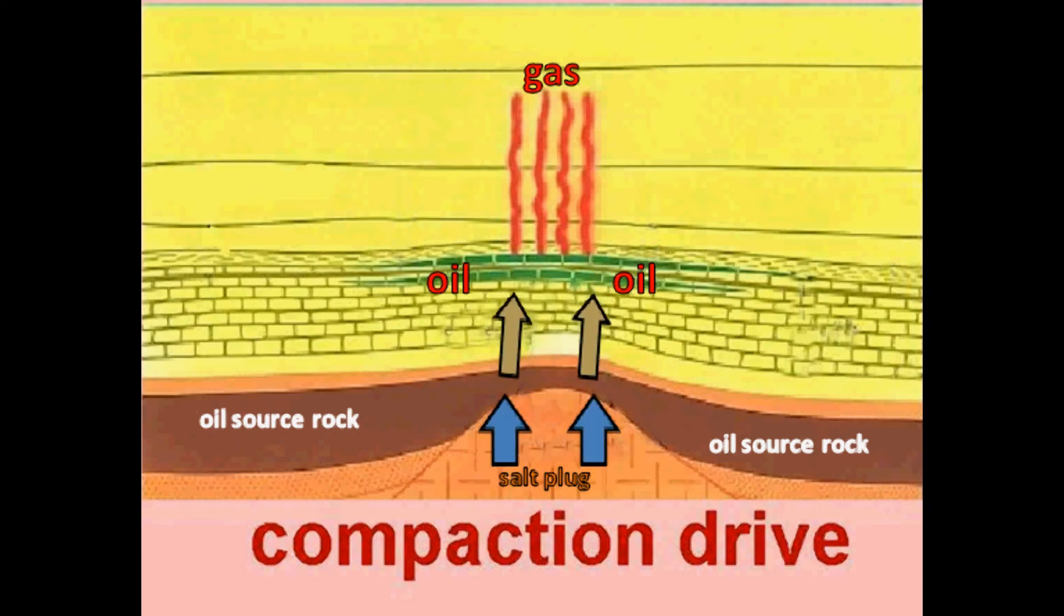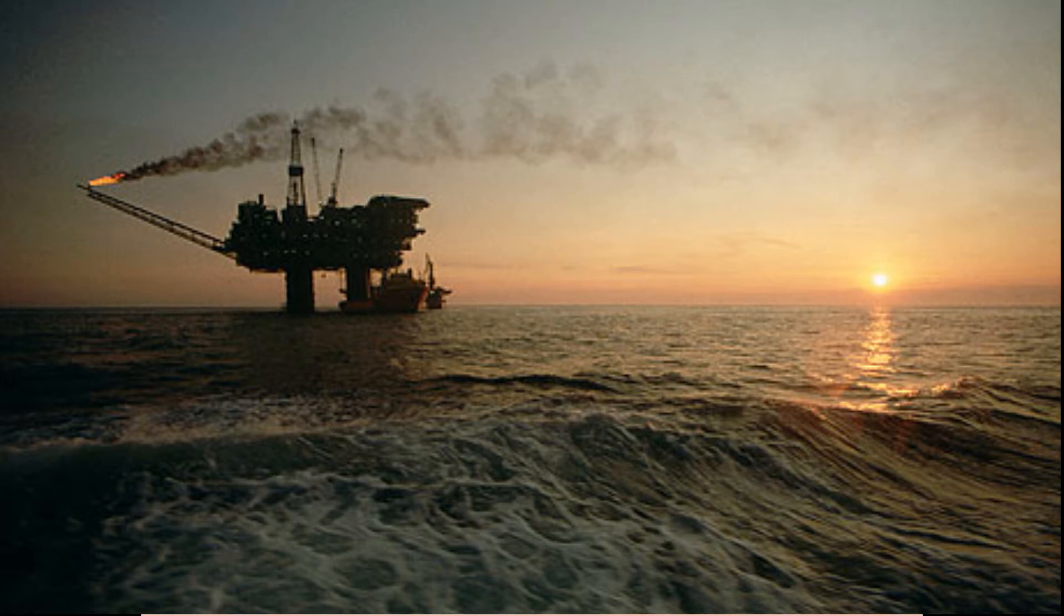The fifth is called a compaction drive. Compaction drives are found in abnormal pressure reservoirs. An over-pressured reservoir compacts or pushes in on itself, pushing out the oil. Compaction drives are not very common and are found mostly in the North Sea.